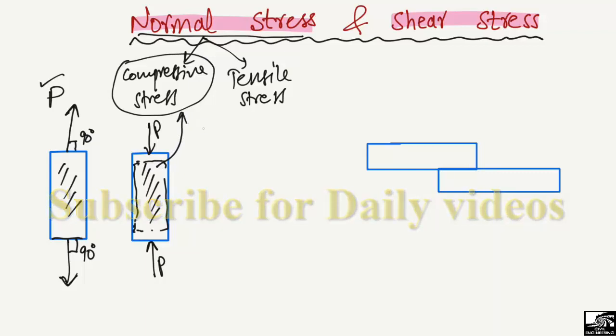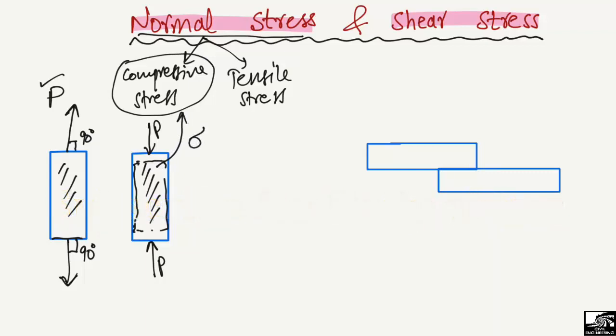Both compressive stresses and tensile stresses are represented by sigma (σ), and it is equal to P over A, where P is either the compressive load or the tensile load, and A is the area of the cross section.